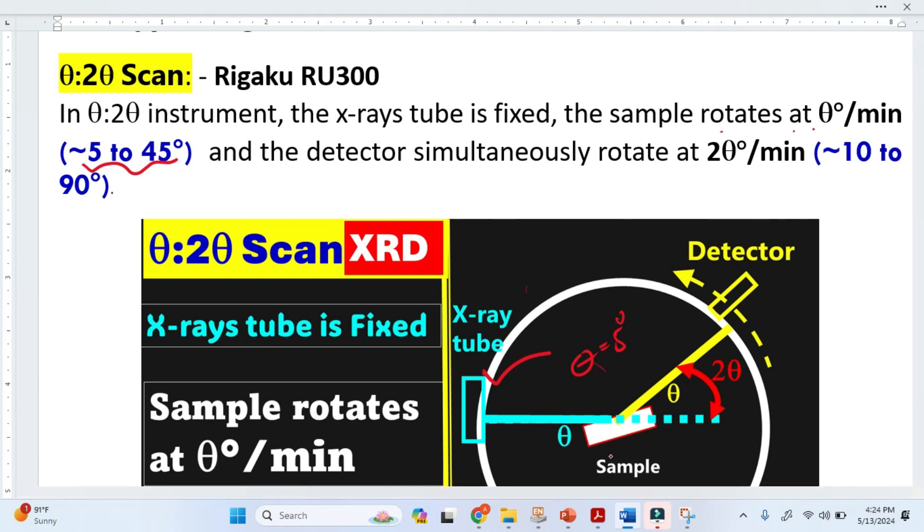In this theta to 2 theta scan arrangement, the X-ray tube is fixed, the sample is rotating, and the detector is also rotating. The sample rotates at theta per minute.